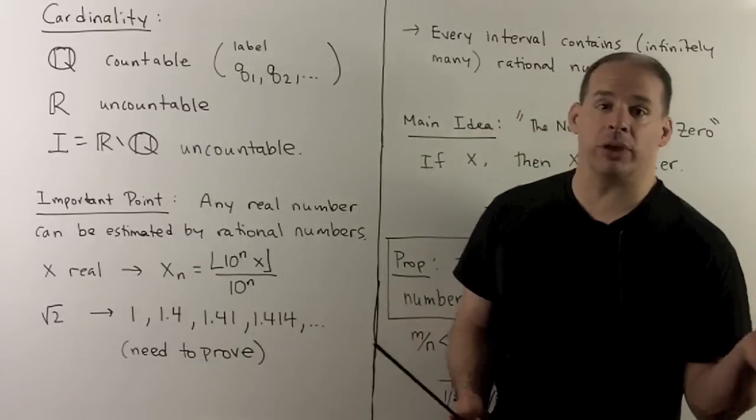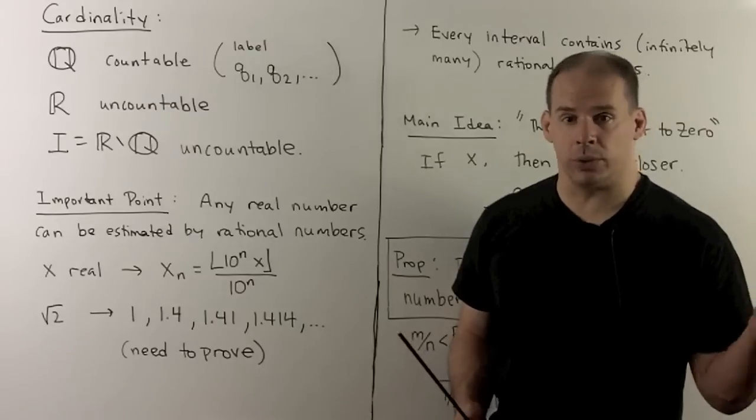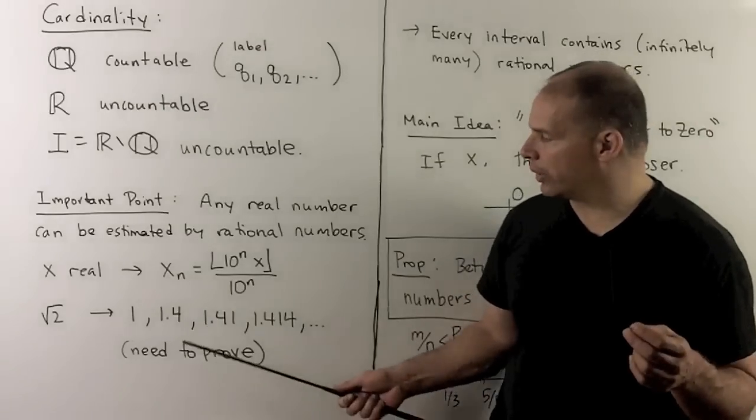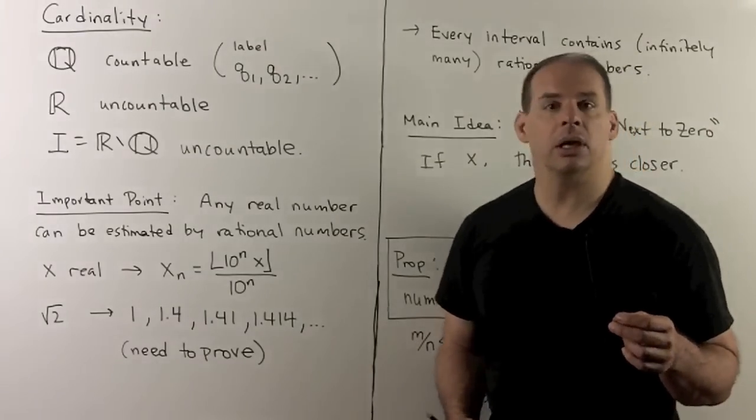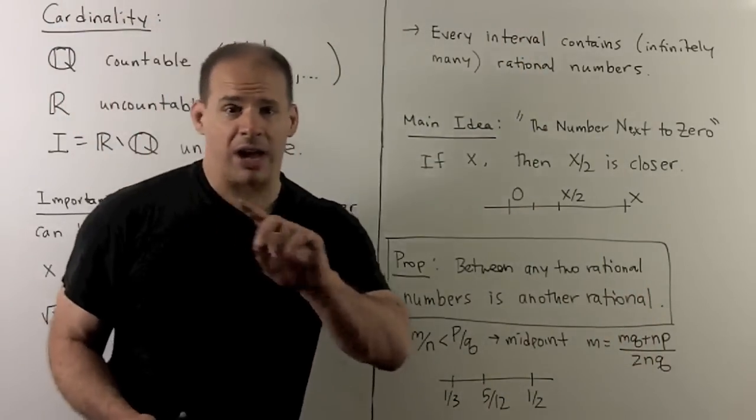Now, to make this rigorous, okay, we first need a construction of the real numbers, and then I need the notion of convergence of a sequence. So, there's still something to show here.